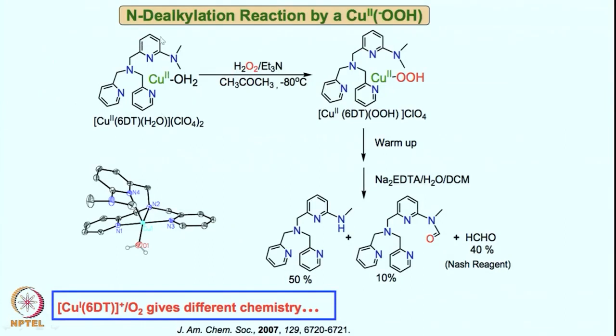Let us take a special case where we have the organic substrate within the ligand backbone. This is the same tetradentate ligand — or similar ligand — what we were discussing for copper. This is a TMPA-based ligand appended with a dimethylamine. Once a copper(II) hydroperoxo species is formed by utilizing hydrogen peroxide and triethylamine, it is found that it can indeed do chemistry at this substrate — that is, N-dealkylation chemistry is happening, where upon oxygen-oxygen bond cleavage the hydroxyl radical can abstract the hydrogen atom and undergo the reaction.